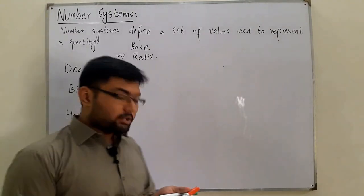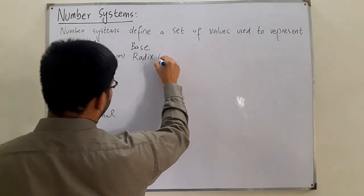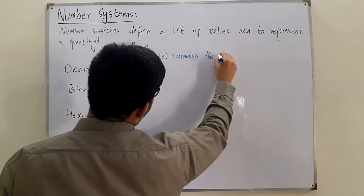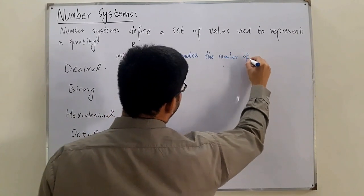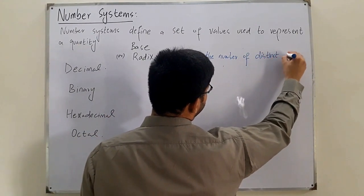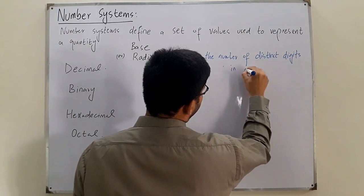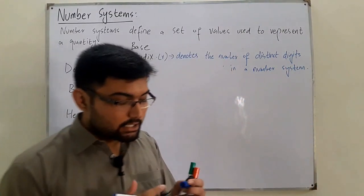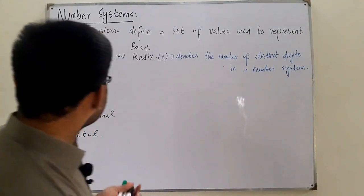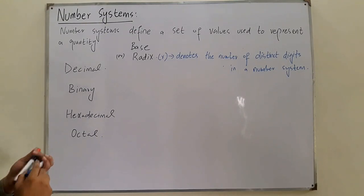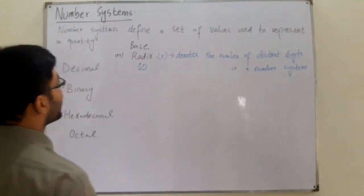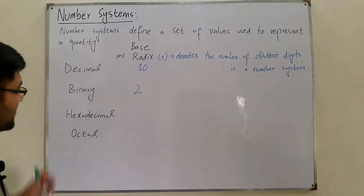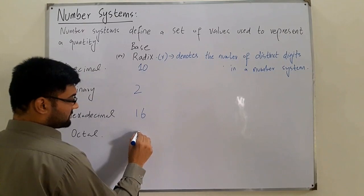The base or radix is denoted by a small r. The radix denotes the number of distinct digits in a number system. For example, for decimal the base is 10, which means we have 10 different digits. For binary the base is 2, which means we have two different digits. For hexadecimal it is 16, and for octal it is 8.